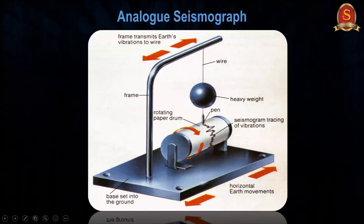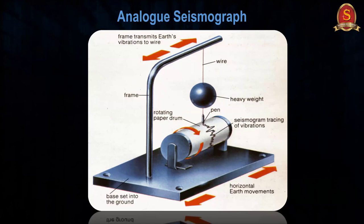Later, analog seismographs were developed based on the simple pendulum method — a ball attached to a wire, with a small pen attached to the ball and a continuously moving drum recorder. When the ground shakes, the ball swings and the pen records on the drum, giving the total duration and direction of the earthquake.